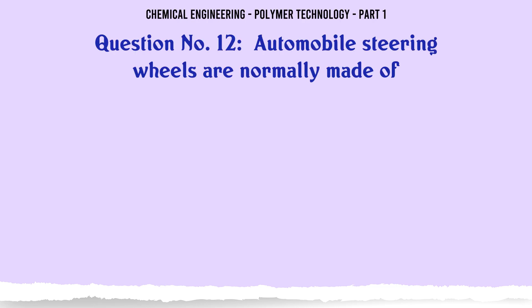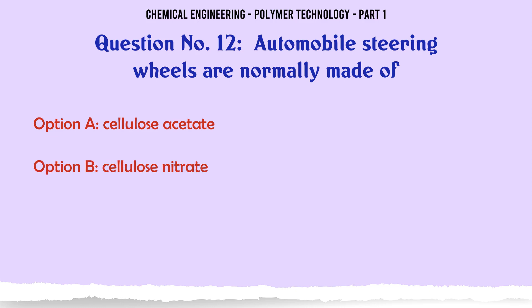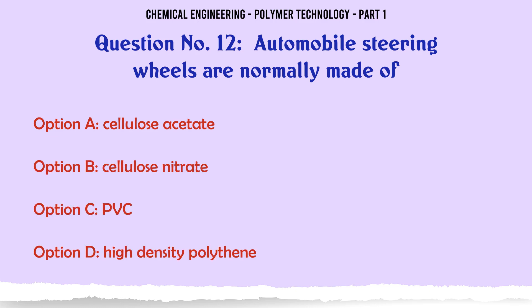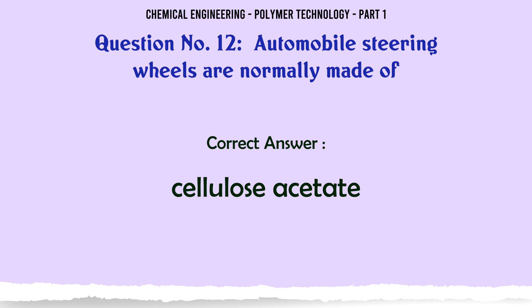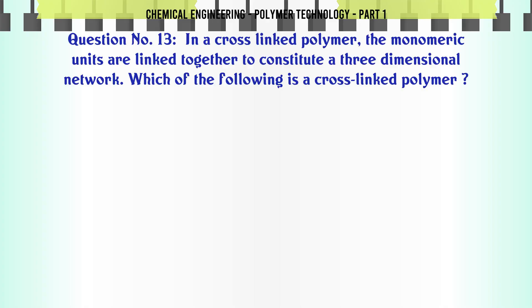Automobile steering wheels are normally made of: A. Cellulose acetate, B. Cellulose nitrate, C. PVC, D. High-density polythene. The correct answer is Cellulose acetate.